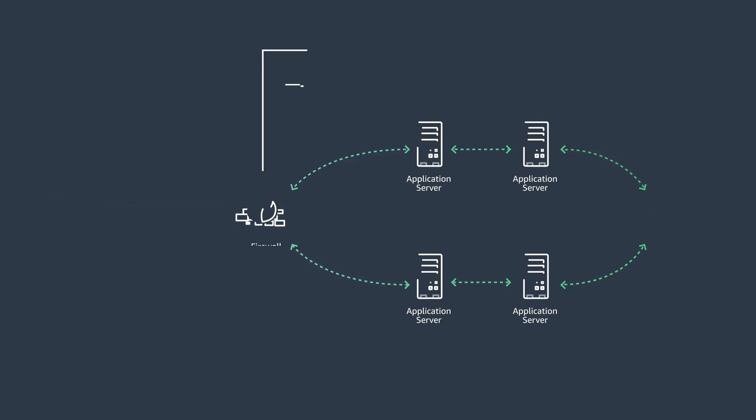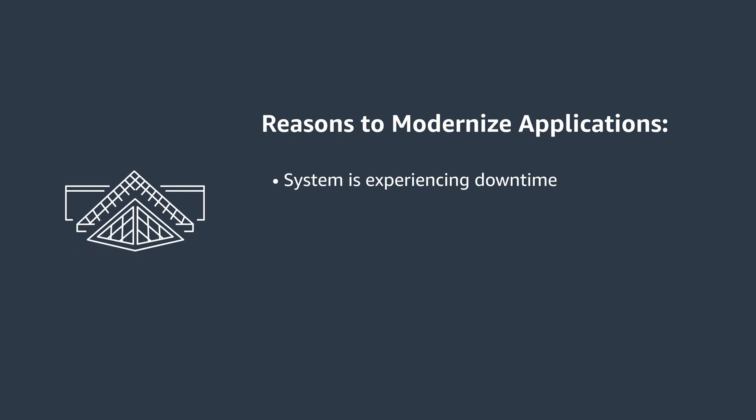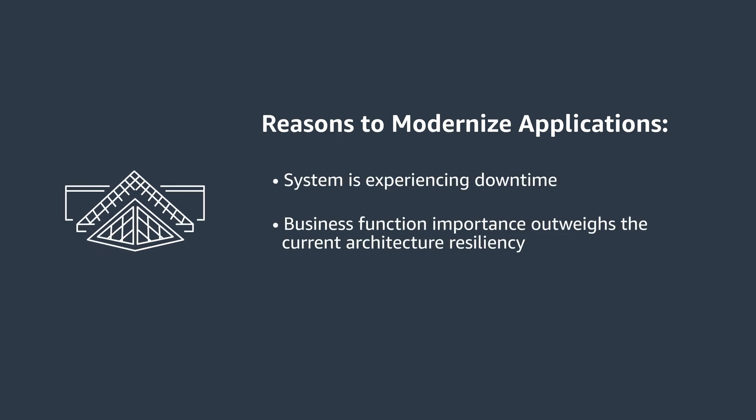In both cases, the reasons to modernize were the same. One, system experiencing downtime. Two, business function importance outweighs the current architecture resilience. Three, application not scaling to meet current demand.